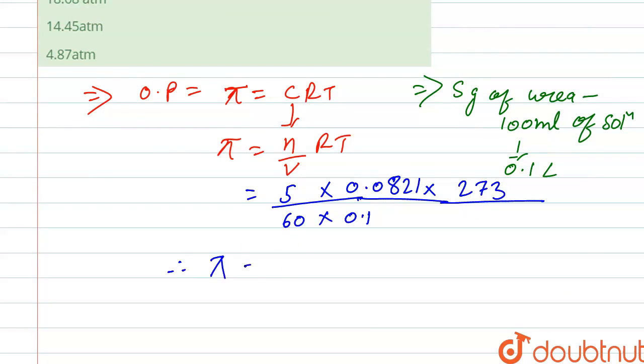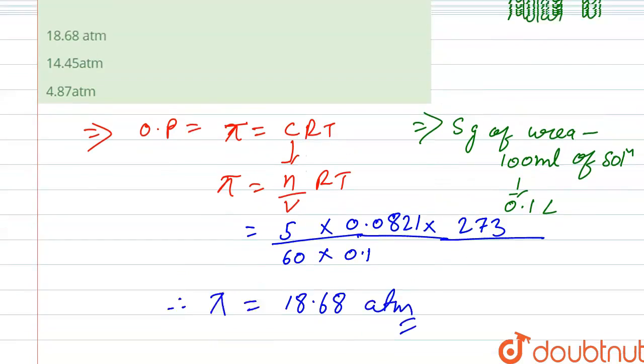osmotic pressure, pi, which equals 18.68 atm. So the correct option is the second one. Thank you.